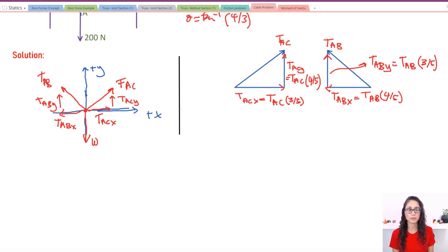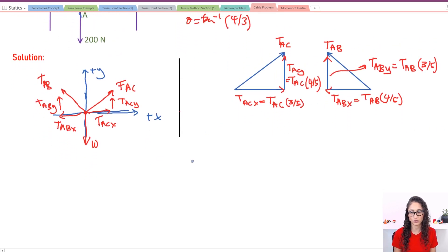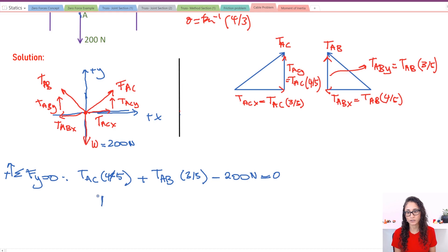Now we can write our equilibrium equations and start solving for these two unknowns, TAC and TAB. But the question only asked for TAB, so that's the only thing we need to look for. I have the summation of the forces on the Y equals zero. Let's pick this to be positive, just like in our free body diagram. So I have TAC_y, which is TAC times four over five, plus TAB_y, which is TAB times three over five, minus the weight, 200 newtons. So minus 200, and this has to equal zero because the system is not moving. Right now we can't really solve this equation. Let's just rewrite it—let's take the 200 to the other side and call this equation one.